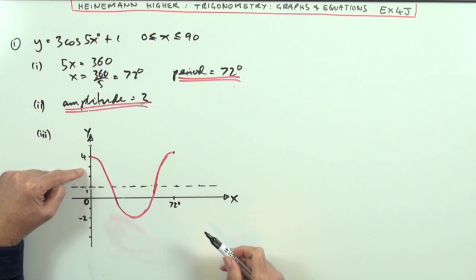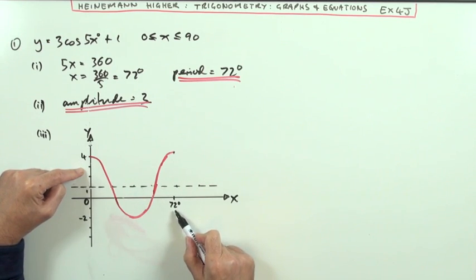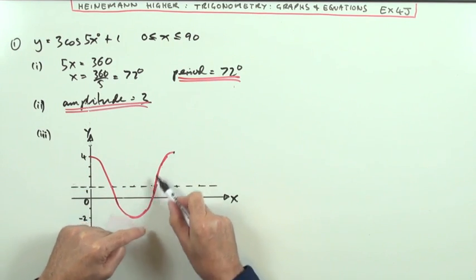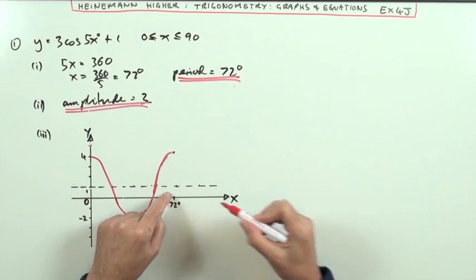So another 18 means it's just another one of these quarters, one of these quarters of the wavelength. So the final part would just be another one that comes back down to the axis here.